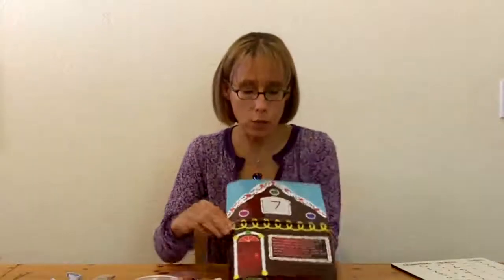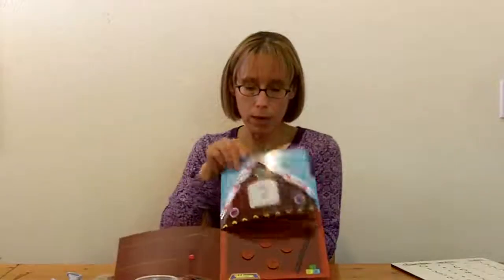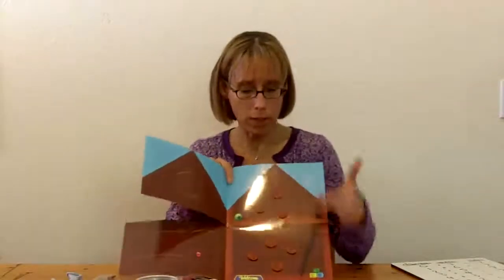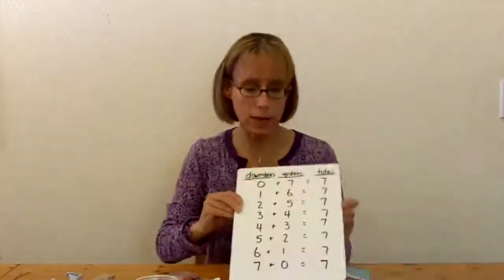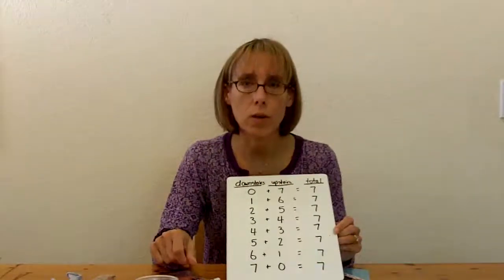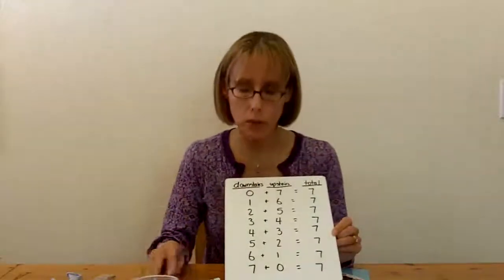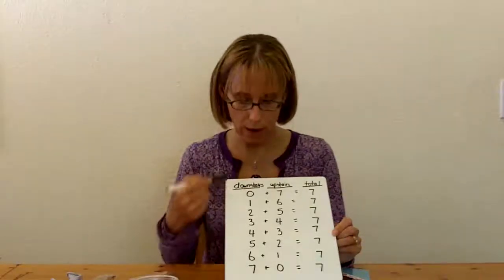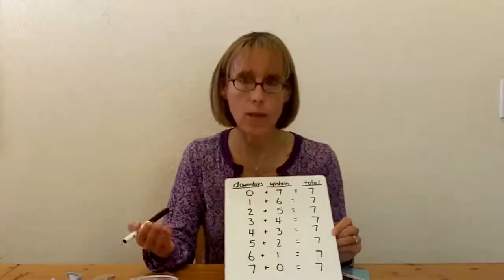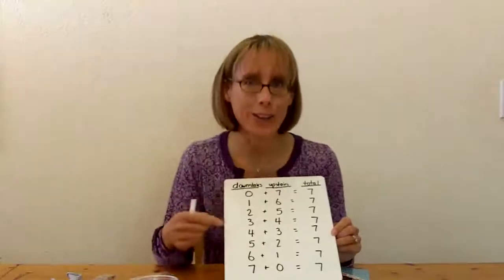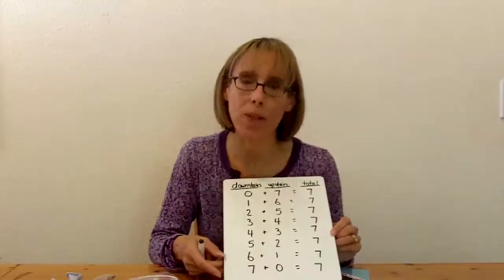An extension to this would be to have the student come up with and write down the different combinations to seven. So for example, this one would be four plus three equals seven. If they have whiteboards, kids love to write on them — we're lucky enough to have them — they can write the combinations on whiteboards, but paper and pencil works just as well. You can see here that I have all the different combinations to seven.